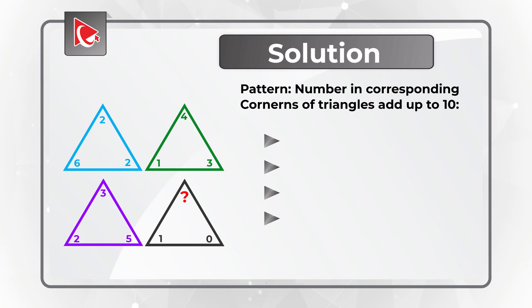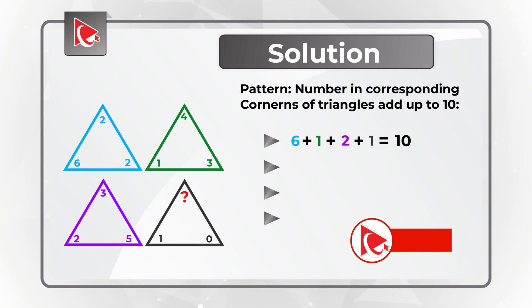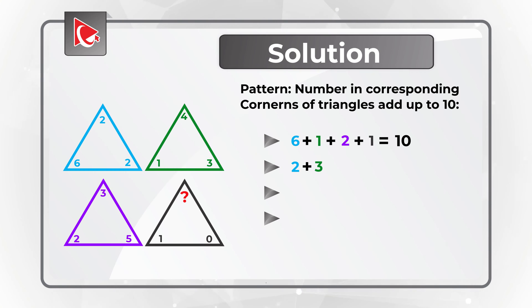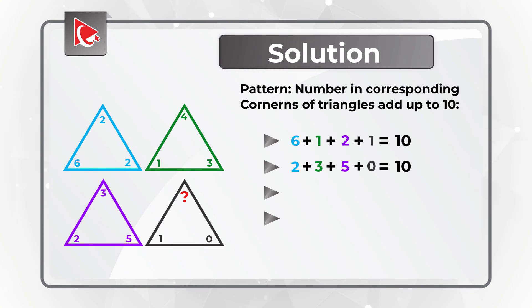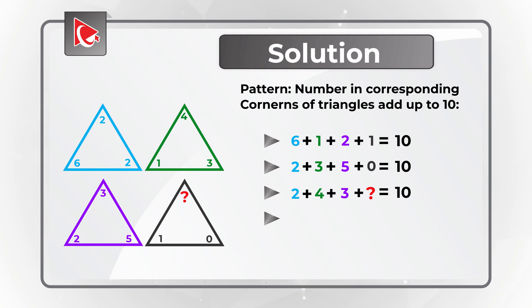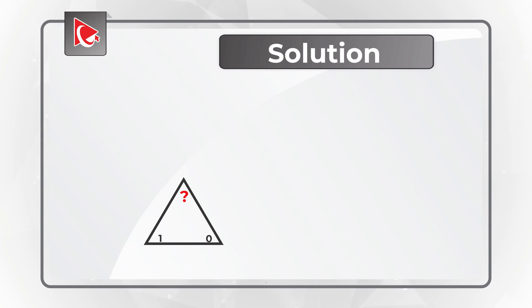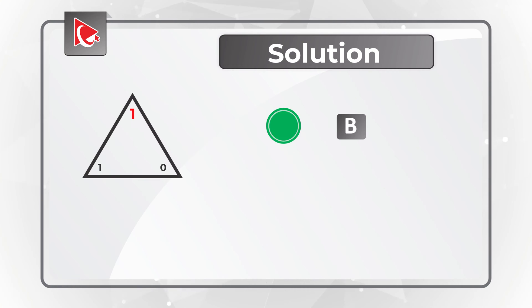The pattern here is that the numbers in the corresponding corners of the triangles all add up to 10. Let's do the math and start with the bottom left corner, then go to the bottom right corner of the triangle. 2 plus 3 plus 5 plus 0 is also 10. Now in the same way, let's calculate the missing number. 2 plus 4 plus 3 plus question mark equals 10. Based on these calculations, question mark equals 1. So the correct choice here is choice B – 1.